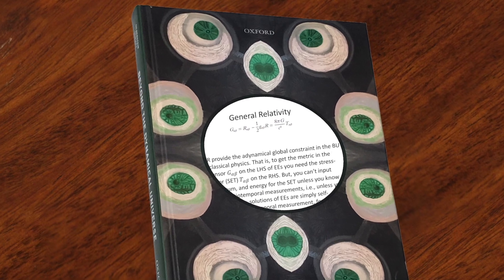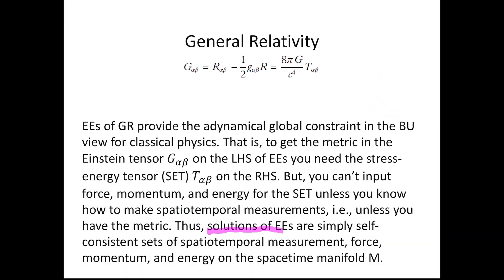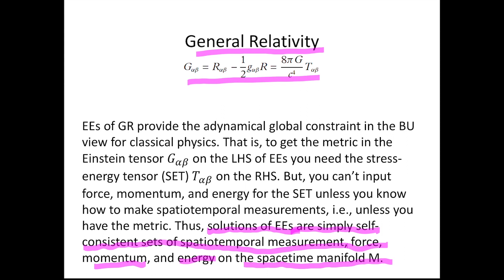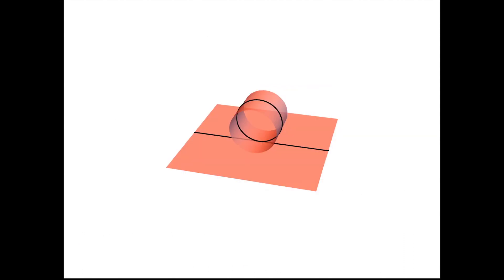As we saw in the previous episodes, solutions of Einstein's equations of general relativity are simply self-consistent sets of spatiotemporal measurement, force, momentum, and energy on the entirety of the space-time manifold that satisfy local conservation of energy-momentum — the divergence-free nature of your stress-energy tensor. It turns out you can create such solutions which allow for the world lines of observers to loop back around on themselves, called a closed time-like curve.